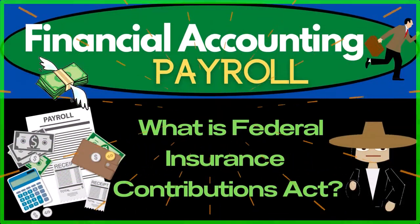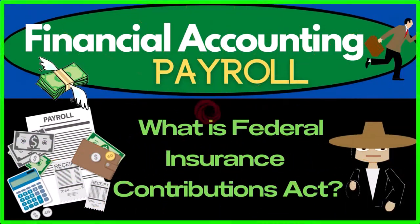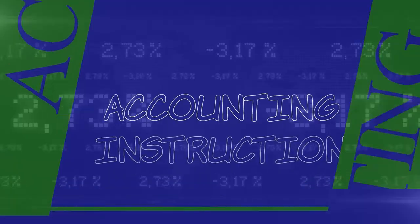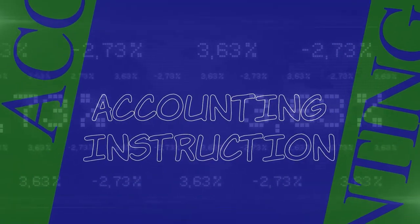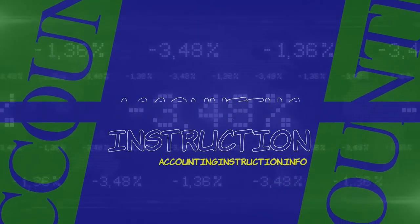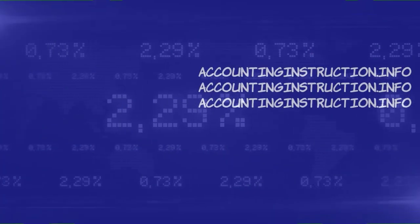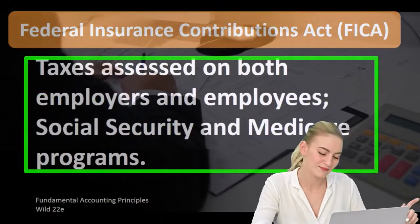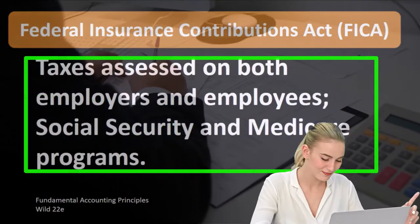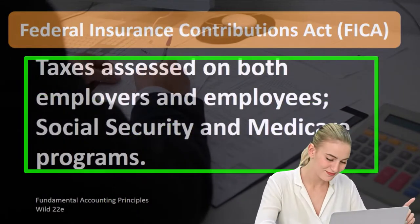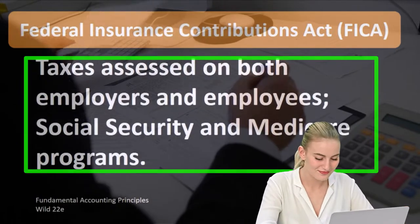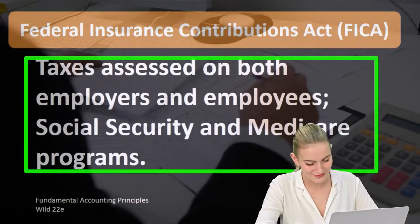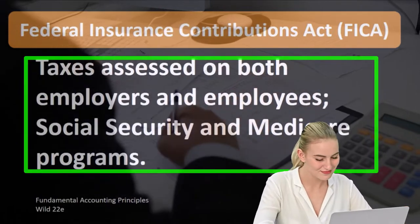Hello. In this lecture we will define Federal Insurance Contribution Act, FICA. According to Fundamental Accounting Principles, Wild 22nd Edition, the definition of Federal Insurance Contribution Act, FICA, is taxes assessed on both employers and employees for Social Security and Medicare programs.